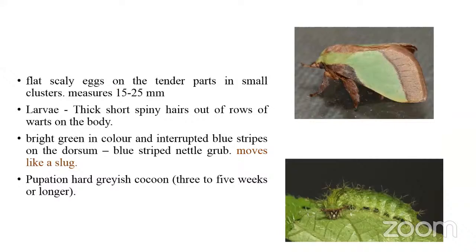Coming to the biology, the adult moth has green wings with a prominent dark patch at the base of each forewing. It lays flat, shiny, scaly eggs on the under surface of the leaves in clusters.